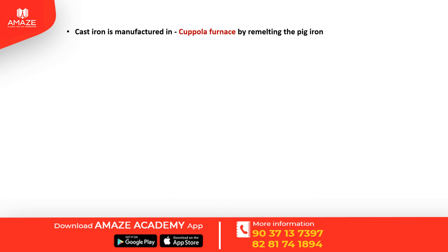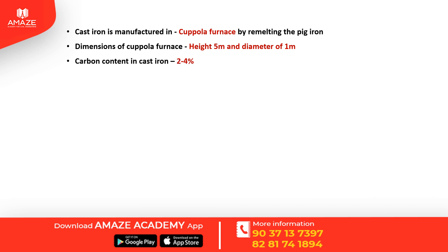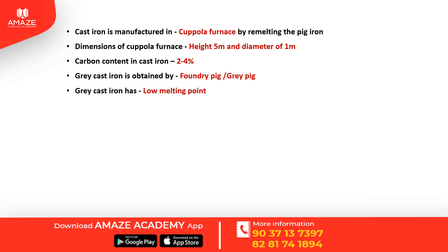Cast iron is manufactured in a cupola furnace by re-melting pig iron. Dimensions of the cupola furnace are height 5 m and diameter 1 m. Carbon content of cast iron is 2 to 4%. Gray cast iron is obtained from foundry pig or gray pig and has a low melting point. White cast iron is hard and silvery white.